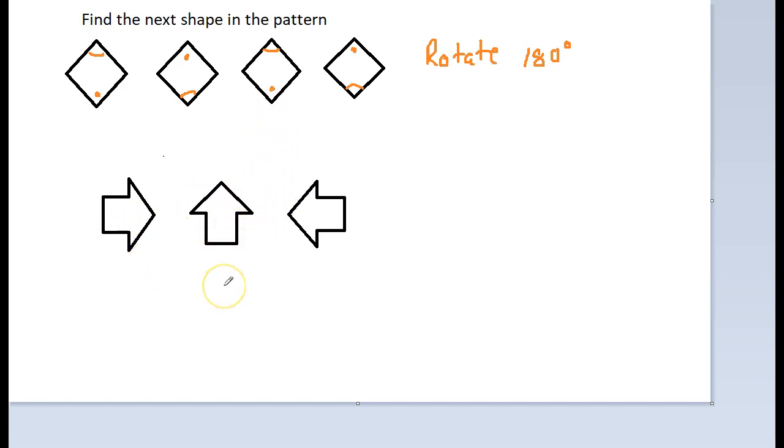What would my next one look like? We had right, then up, then left. It's going to point down. So let me get an arrow tool and let's make an arrow pointing down. That is going to be our next arrow.